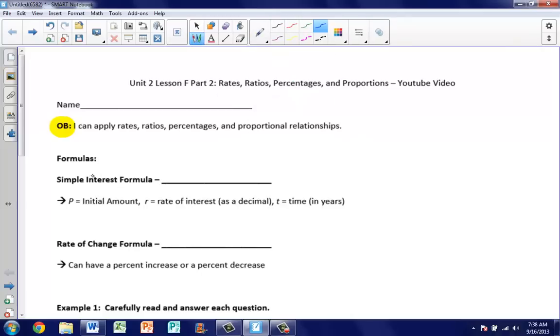What we want to start off with is our simple interest formula. We have two formulas for this section. Simple interest formula should look familiar because it's a formula we worked with in Unit 1. Our formula is I equals P times R times T. P is your initial amount, R is your rate of interest written as a decimal, and T is your time in years. So we're going to do a little bit more work with that today.